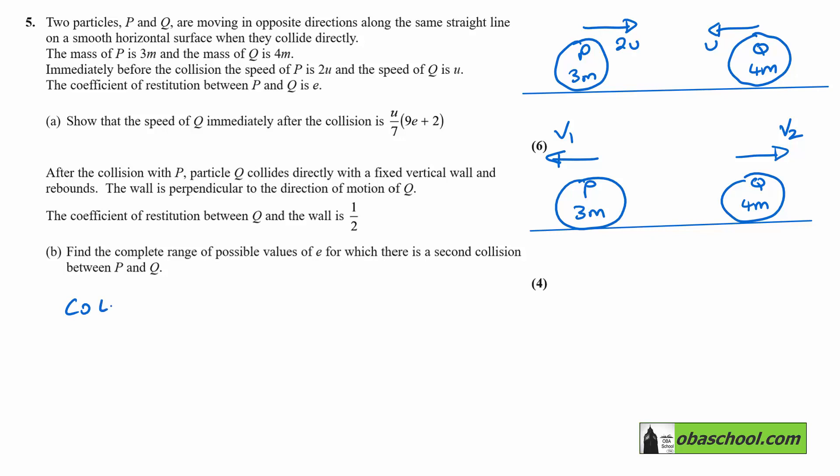So we have the conservation of linear momentum. Taking the right as positive, we have 6mu, which is the momentum of P before. So that's from this part of the diagram just here. Take away 4mu, and that's going to be equal to 4mV2, take away 3mV1.